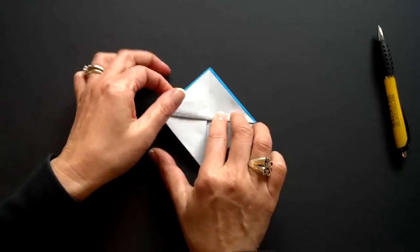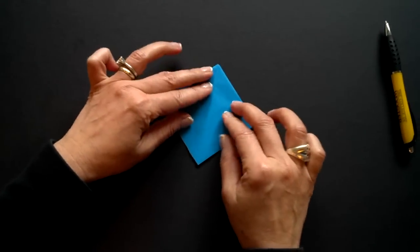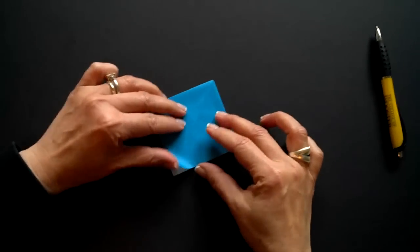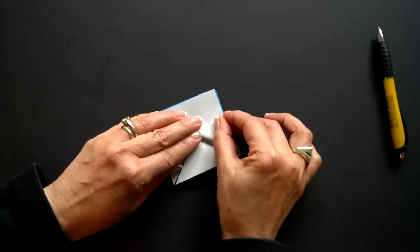I'm going to turn this over and do the same thing on the other side. Taking this top triangle, or this bottom corner, folding it up to the top.